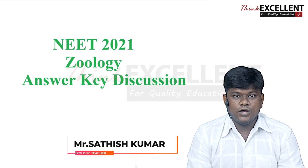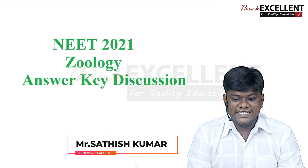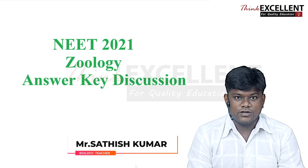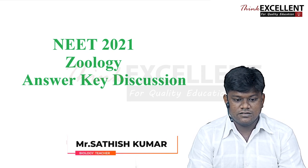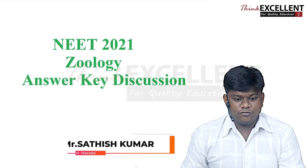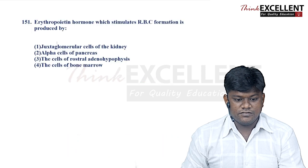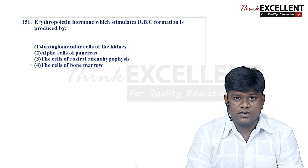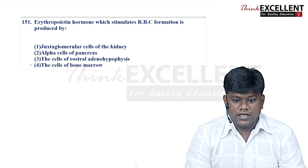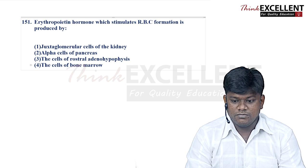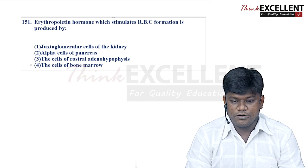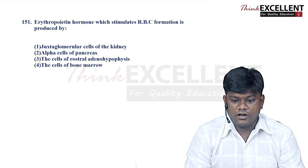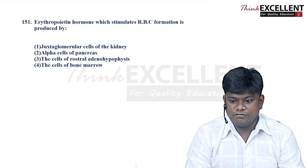Hello students, welcome to this NEET 2021 biology answer key discussion. We are going to see the first question — question number 151: erythropoietin, a hormone which stimulates RBC formation, is produced by?